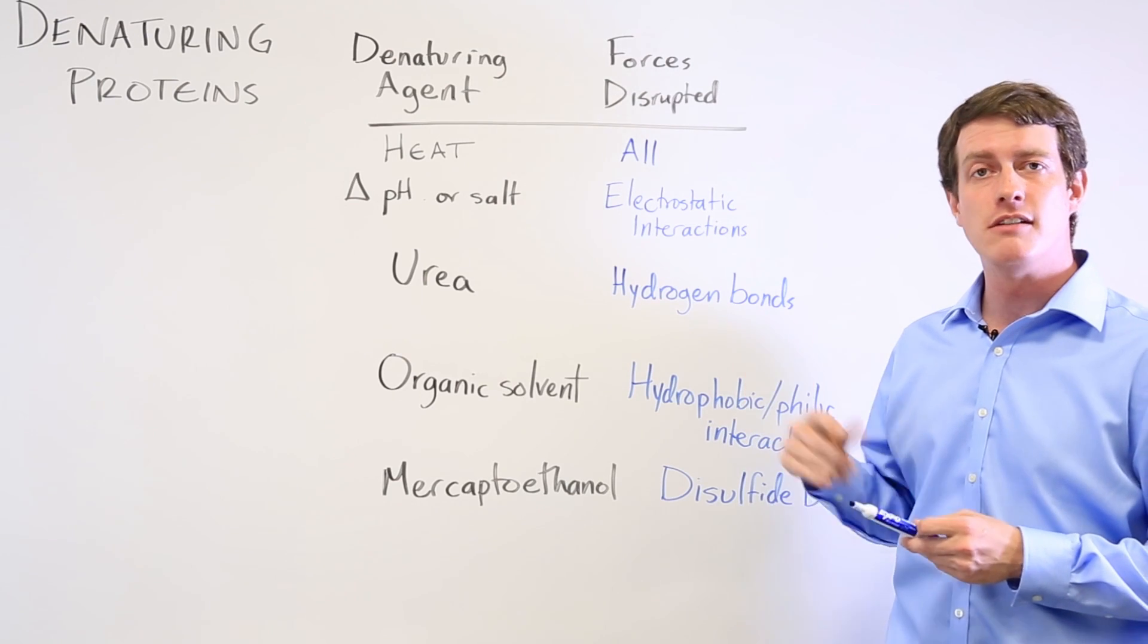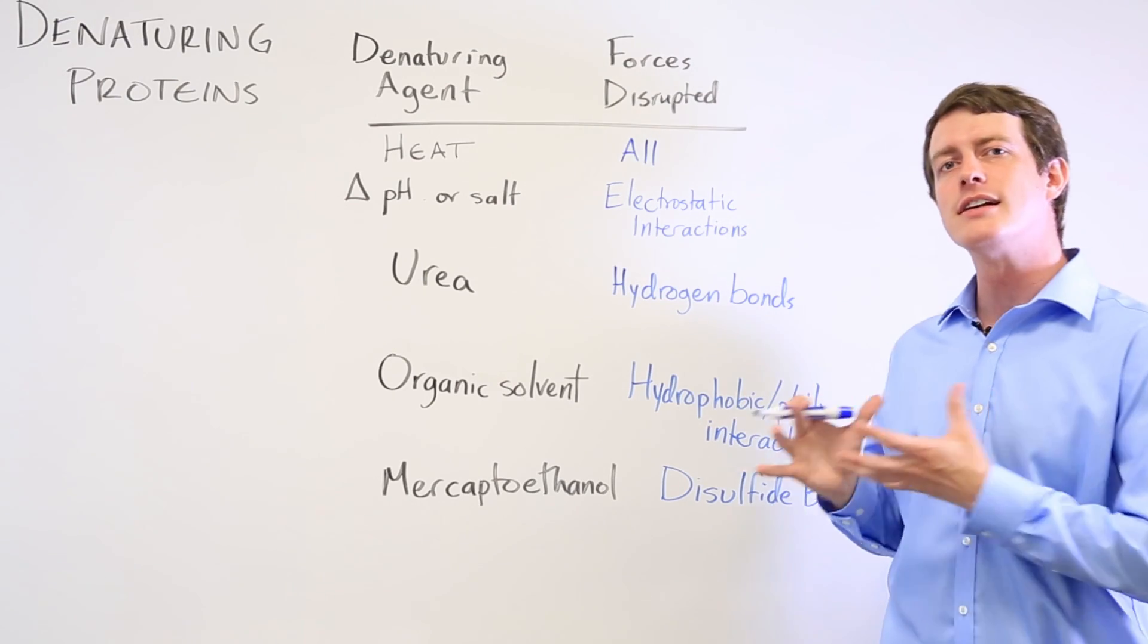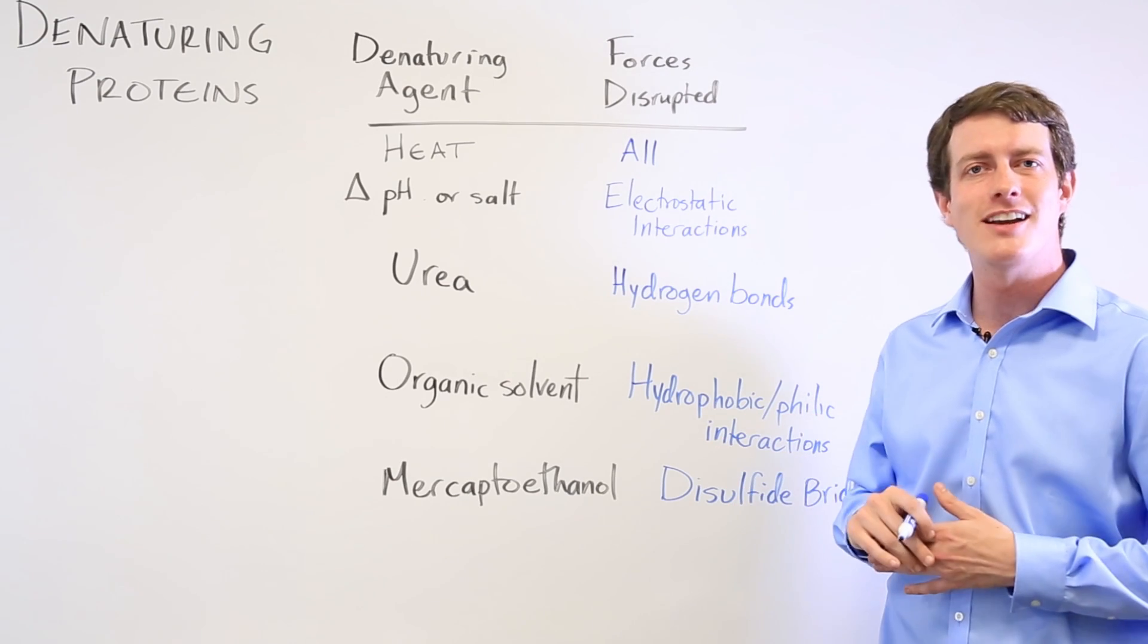Urea breaks hydrogen bonds and that's a very crucial thing for the alpha helix and beta pleated sheet of the secondary structure.